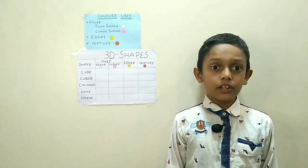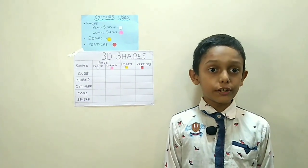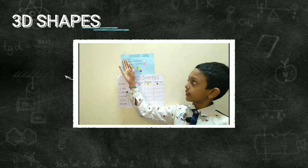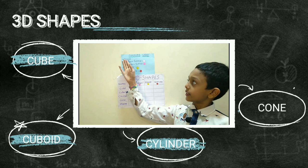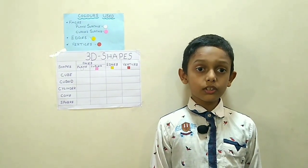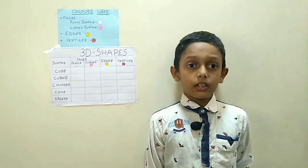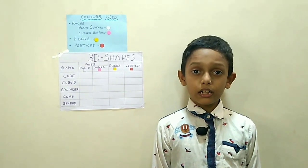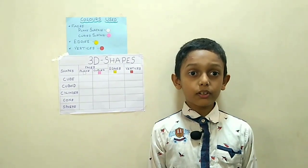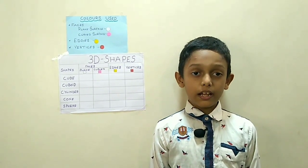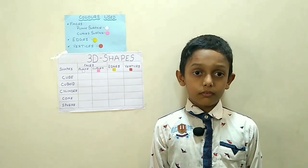Hi friends, I am Dinesh. Now we are going to see about 3D shapes. So what is 3D shapes? 3D shapes are that which have height, length and breadth. Cube, cuboid, cylinder, cone and sphere are 3D shapes. Now we are going to see about edges, faces and vertices of 3D shapes.